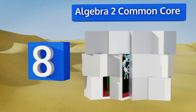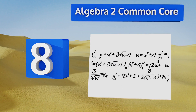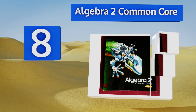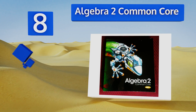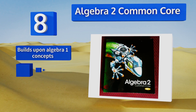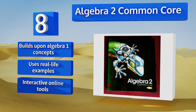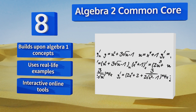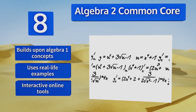Coming in at number eight on our list, Algebra 2 Common Core is designed for students in 10th or 11th grade. It has a nice clean layout with minimal pictures to distract you, though this can make it difficult for individuals who prefer a visual learning experience. It builds upon Algebra 1 concepts and uses real-life examples. It includes interactive online tools.